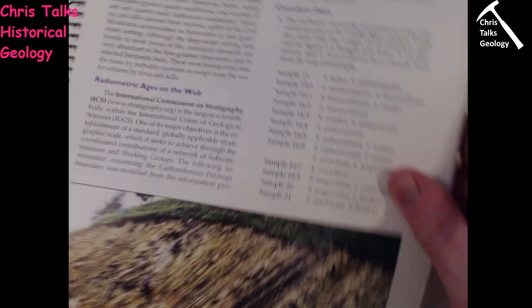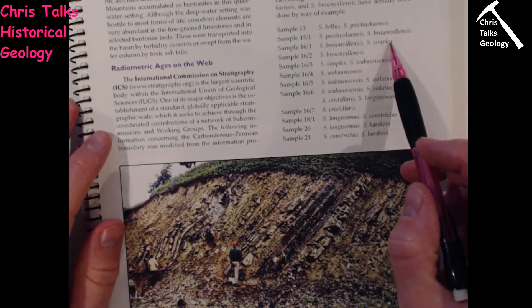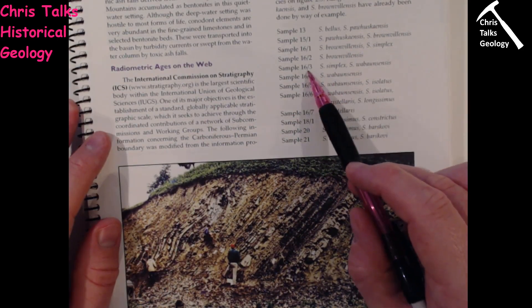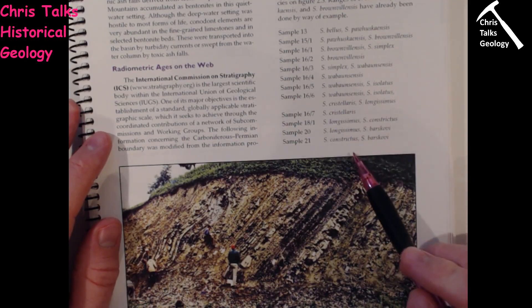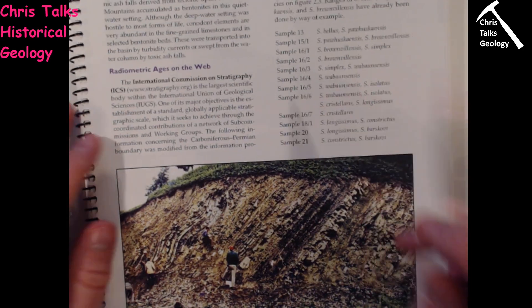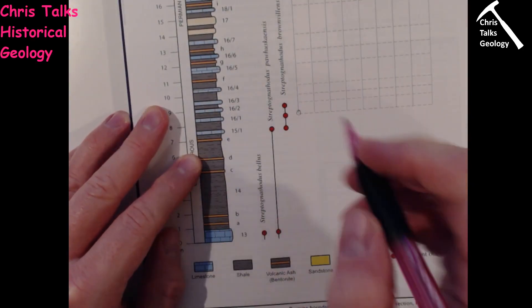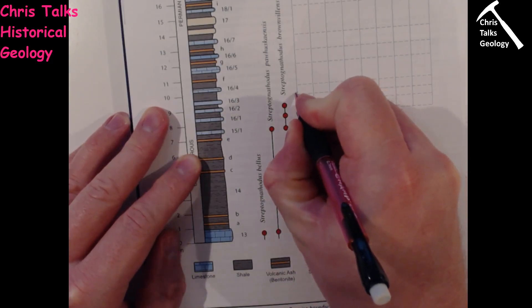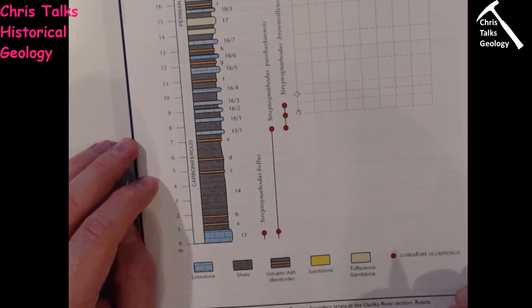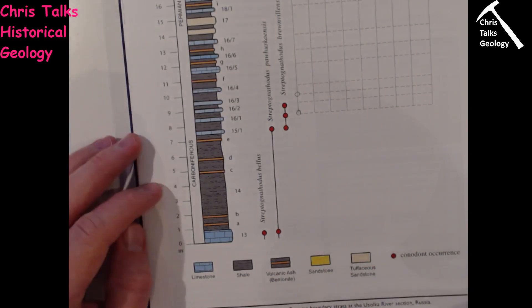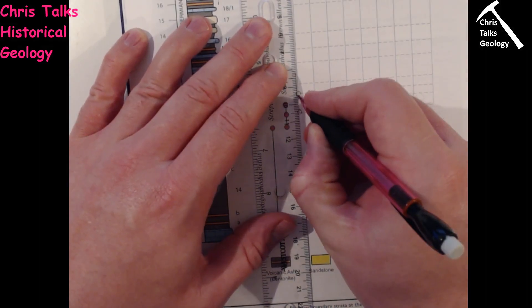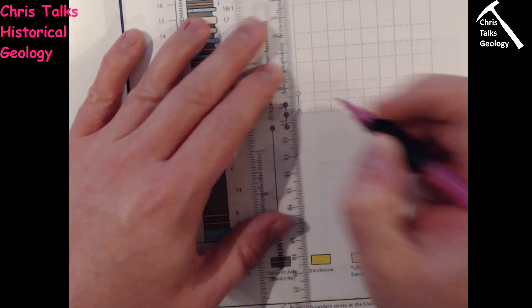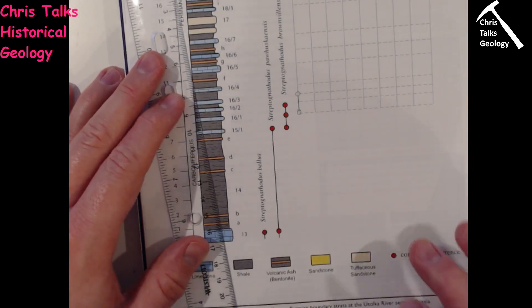I'm going to go back to the data and check: does S. Simplex appear again? Yes, it does — at 16-3. From that point on, S. Simplex doesn't appear again in the sequence. So I find 16-3 on the diagram, come across, and mark it there. That's the range for S. Simplex — it occurs between those two points. I'm going to simply draw a line to link them together, just like they've done on the example ones.